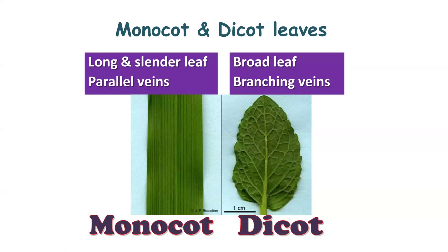When we observe a banana leaf, the veins are arranged in parallel. Monocot leaves are long and slender with parallel venation. The main difference between dicot and monocot leaves is that in dicots, reticulate venation is seen — that is, network-like veins. Whereas in monocots, the veins are arranged in parallel. Based on these leaves, we can identify whether a plant is dicot or monocot.